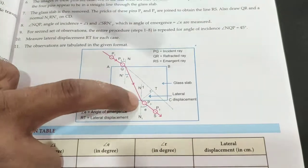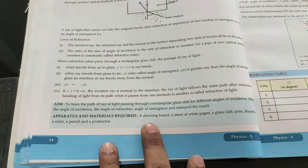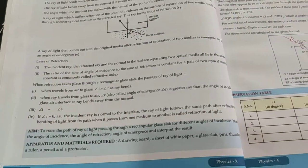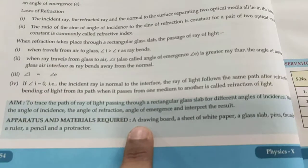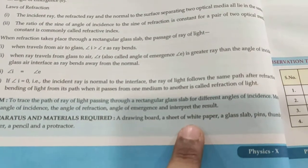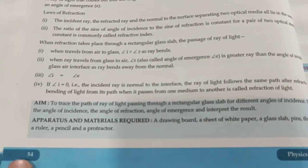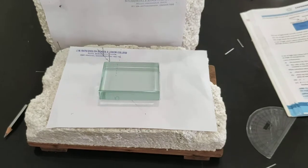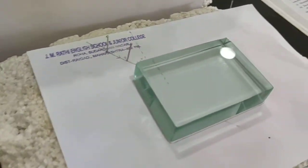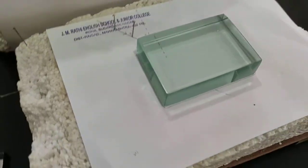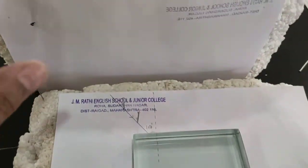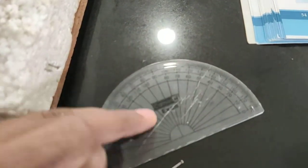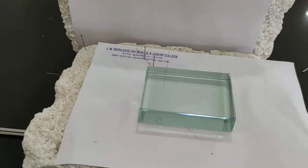Before starting the experiment, let's note the apparatus: a drawing board, a sheet of white paper, a glass slab, pins, thumb pins, a pencil, and a protractor. Here you can see the glass slab, the paper board as the background, the pin which acts as our object, and the protractor used to measure the angles.